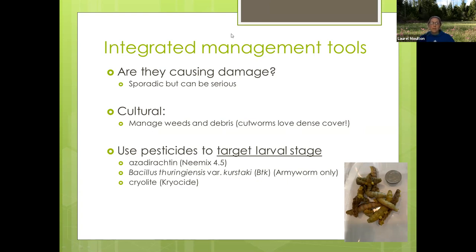Spinosad was listed in WSU recommendations for home use but not in the farm section — that's the only reason I left it out. It makes sense that it would work for cutworms. Some recommendations like cryolite, which is a clay, may not be practical because it rains a lot here and you'd have to reapply frequently. Also worth noting that with subterranean pests, especially large ones like this, tillage can be really effective in reducing soil populations.